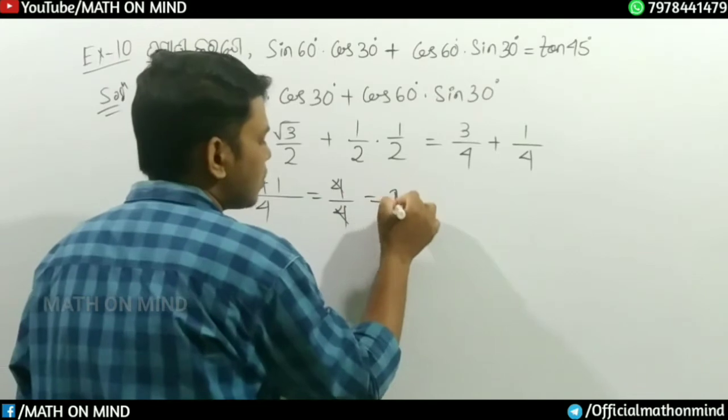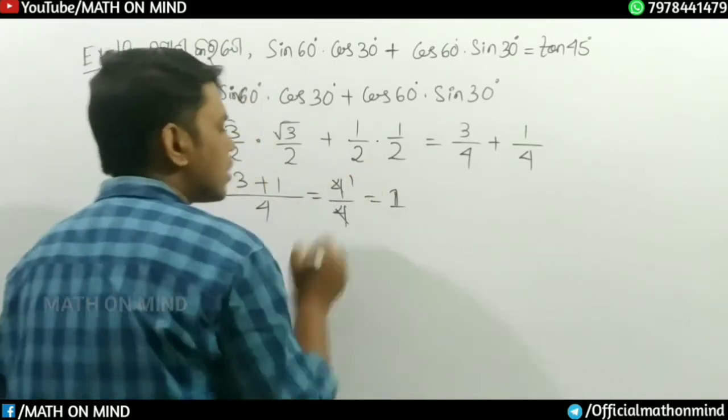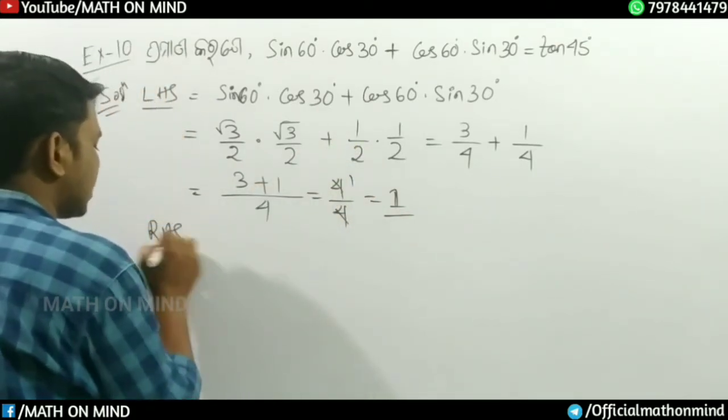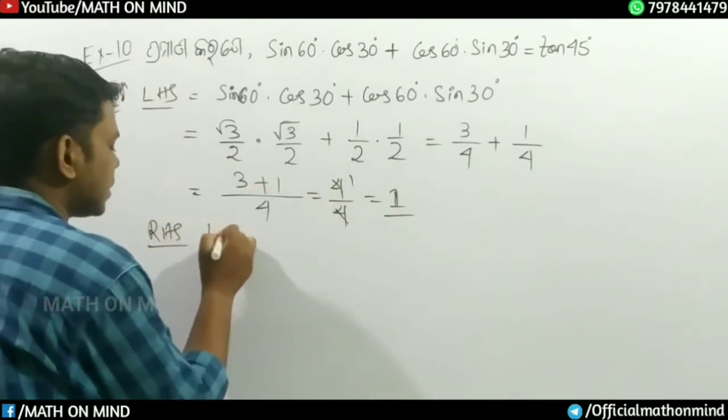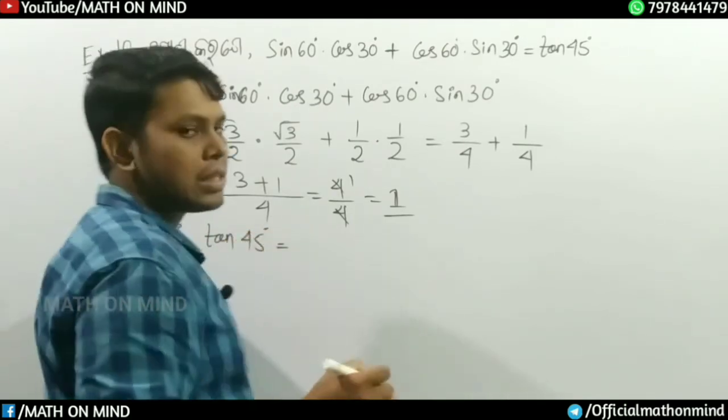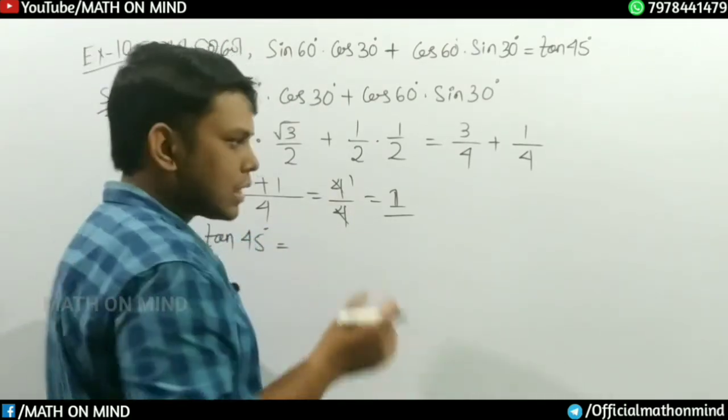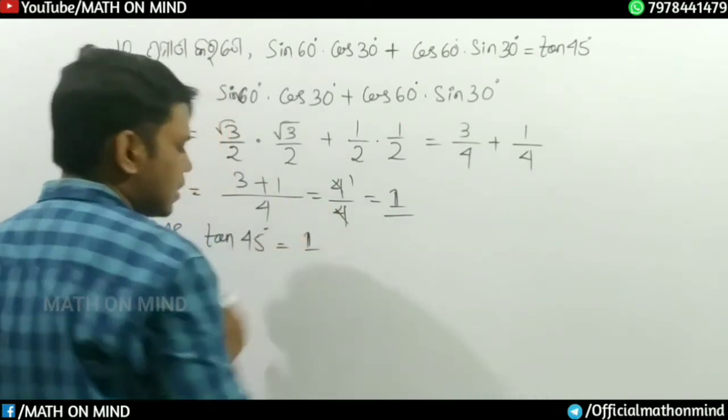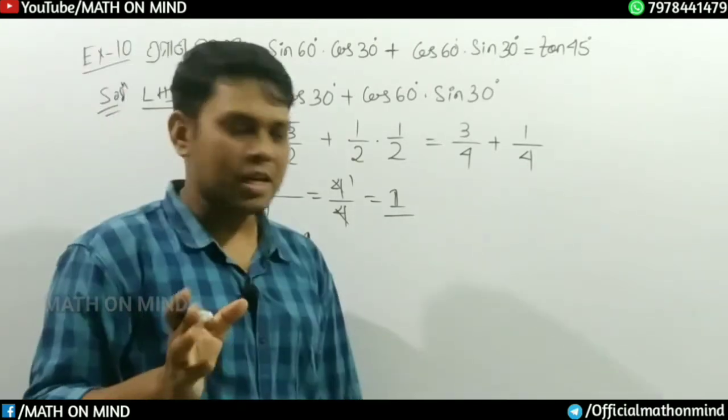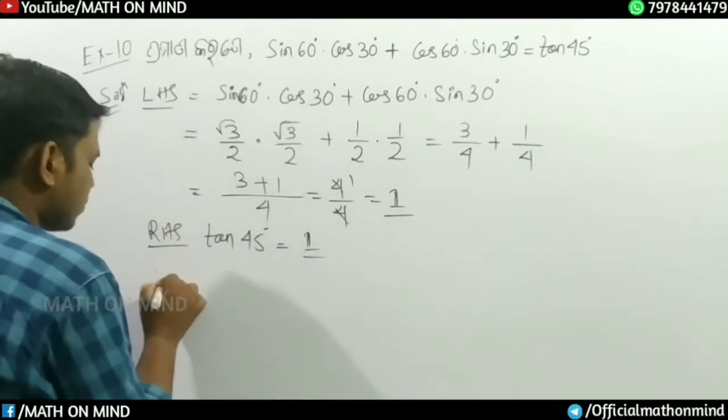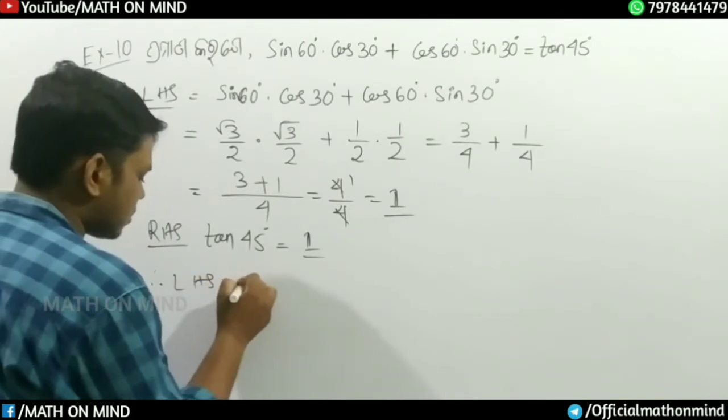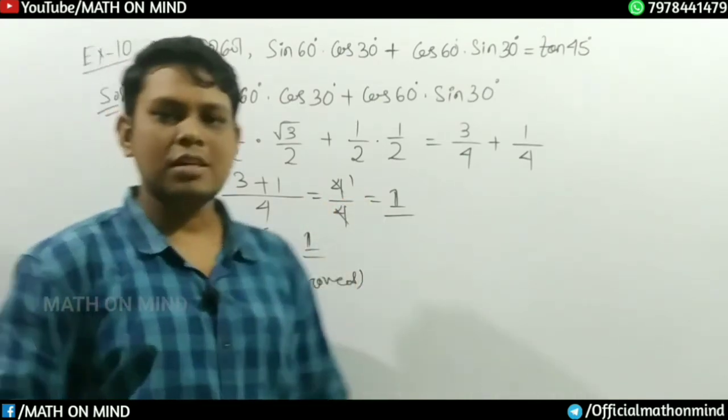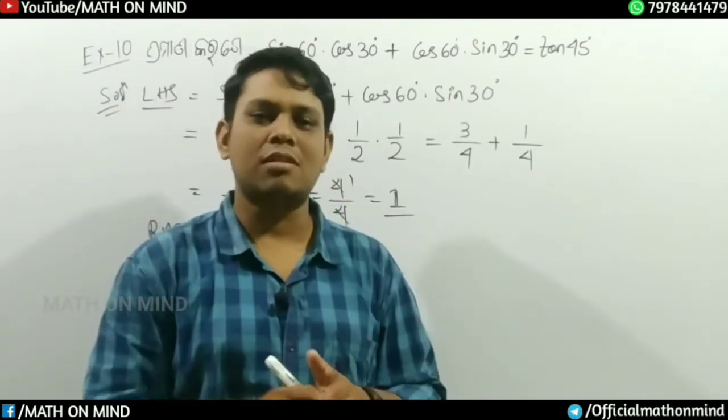We get 1, so LHS equals 1. Now RHS: tan 45 degrees is also 1. Therefore LHS equals RHS, and the answer is proven.